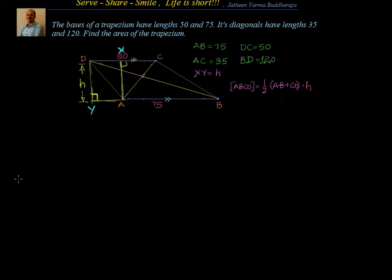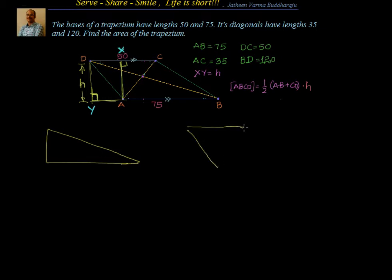We want to leverage diagonals AC and BD and apply the Pythagoras theorem. If we separate the two triangles, one triangle has height H and base part 75. The unknown additional base part, let's call it A, so the full base becomes 75 plus A. We know BD = 120.